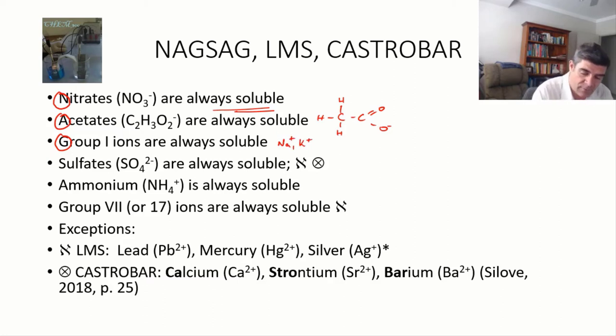The SAG part is sulfates, ammonium, and the group 7. Now, when we get to these ones, except for ammonia,